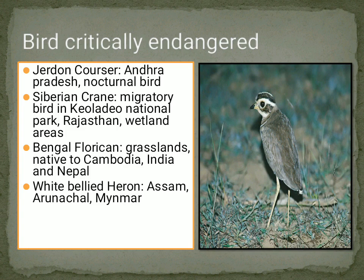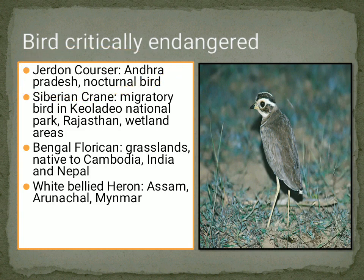Now let's talk about critically endangered birds. The Jordan Cussar is a state bird and a nocturnal bird — it comes out at night to feed and then goes back. It is a scrub jungle flagship species, important because of its role in the food chain. Most state animals and birds are also weed followers.